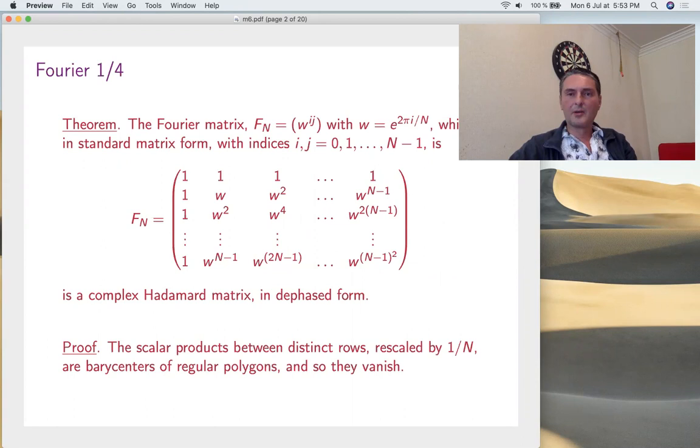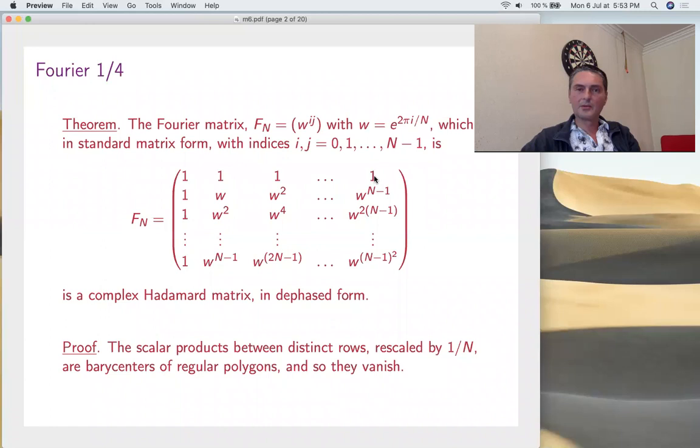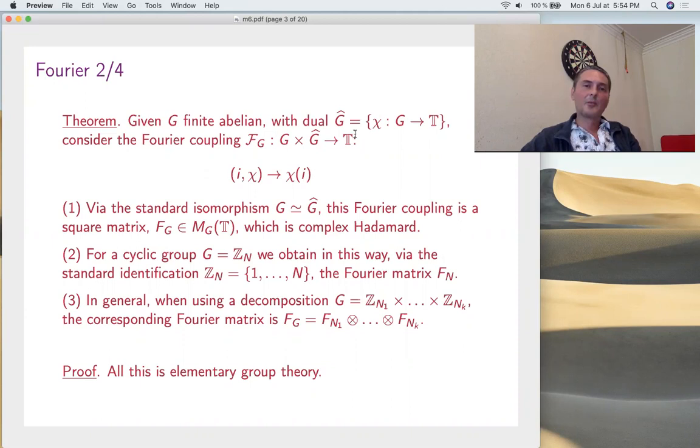Let's start first with the Fourier matrix by reviewing what we know about it. That's your matrix, the fact that it's Hadamard is clear. Just scalar products, you're computing sums of roots of unity, which are progressions on the circle. If you get the very centers of the polygons, it's zero always. This is the Fourier matrix of the cyclic group. In general, given an abelian group, we have the group of characters, and you can talk about the Fourier matrix, which is just the coupling between G and G hat.